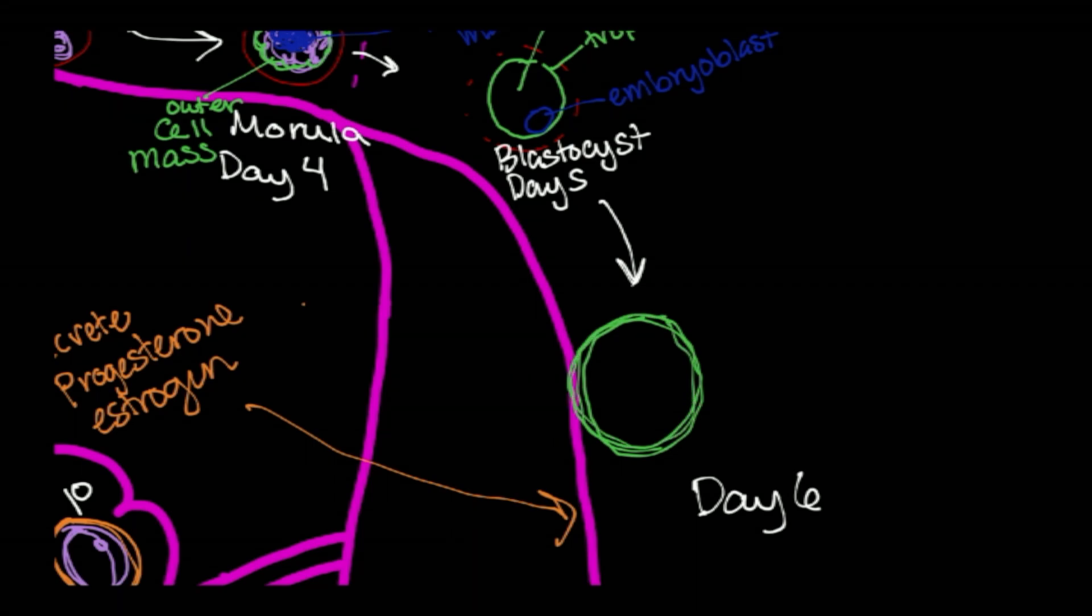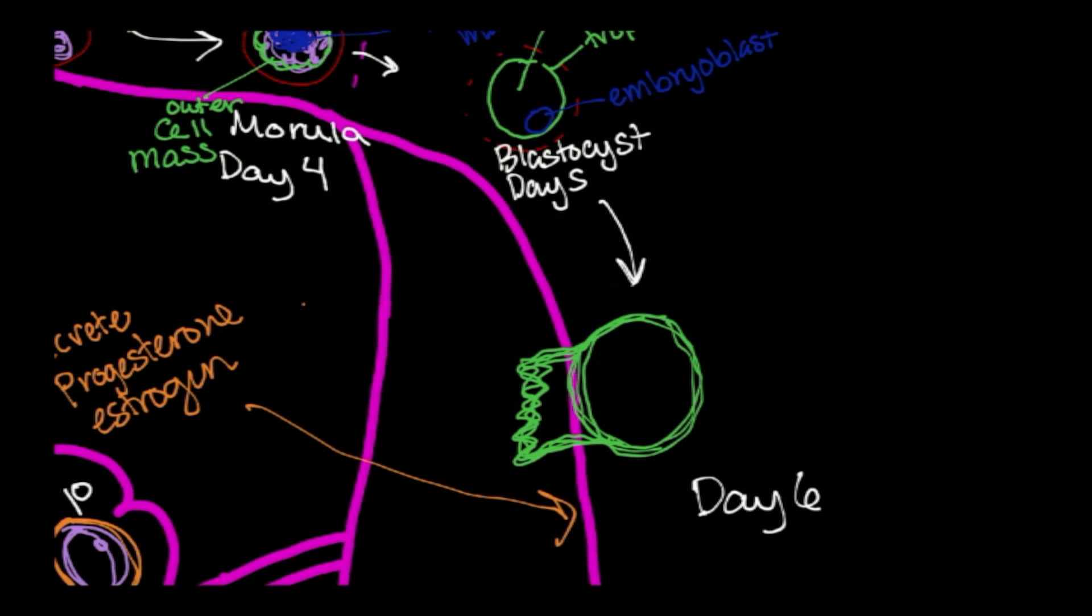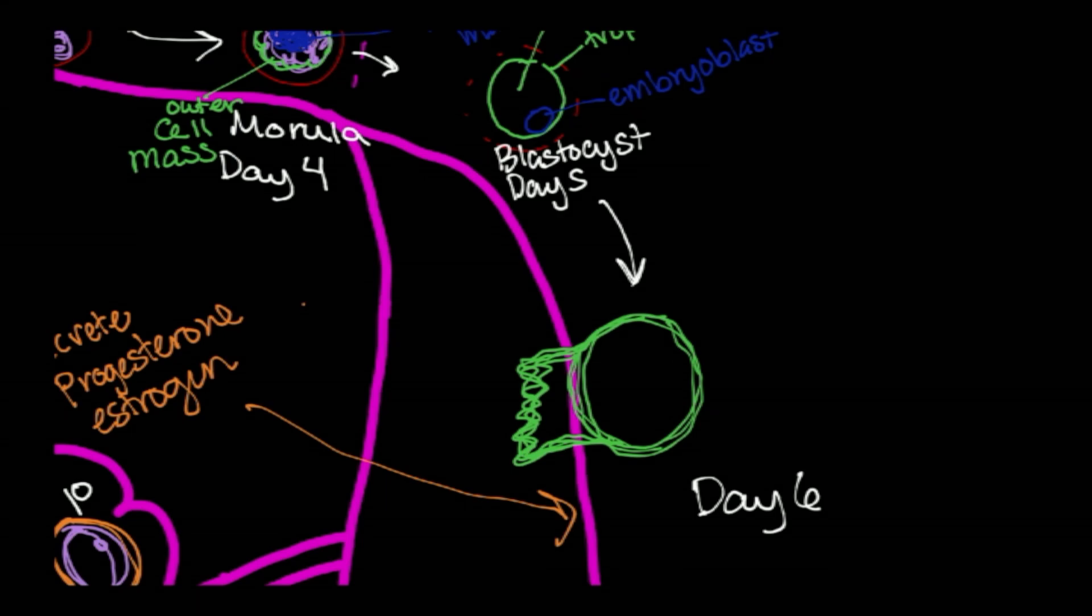Green is our trophoblast. And the trophoblast begins to burrow into the endometrium. And also on the sixth day, there's going to be the beginning of the formation of the bilaminar disc. The embryoblast proper is going to have epiblast and hypoblast cells scattered throughout it. But about around the time of implantation, those cells begin to polarize.